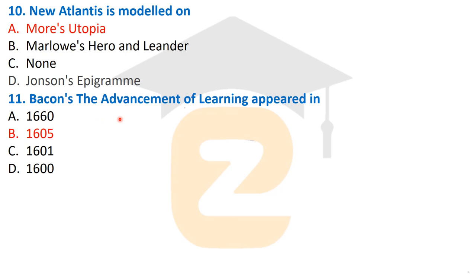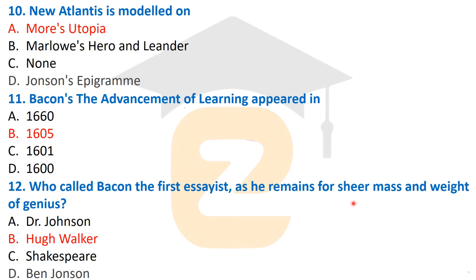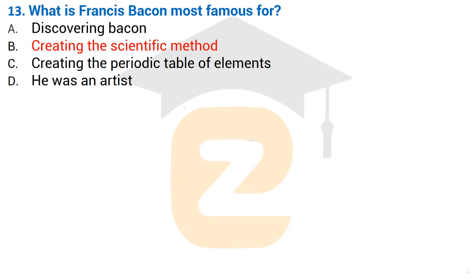Bacon's The Advancement of Learning appeared in 1605. Question number 12: Who called Bacon the first stage, describing him as possessing the remains of the share, mass, and weight of genius? That was said by critic Hugh Walker, who made this remark about Francis Bacon.